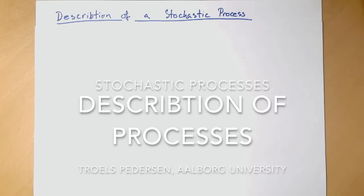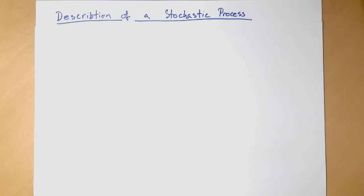Random variables can be described via probability distributions. And indeed, if you have several random variables or multiple random variables, you could describe it in terms of joint probability distributions. So you may wonder, can we actually do something similar to a stochastic process?